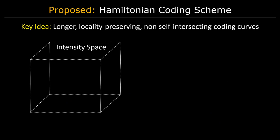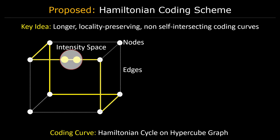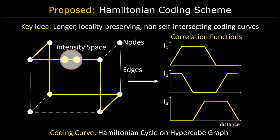We find that the depth resolution of a time-of-flight camera can be increased by using codes with long, locality-preserving, non-self-intersecting coding curves. One family of curves that satisfy all of these properties is Hamiltonian cycles on hypercubes. Due to the length and locality-preserving properties of this curve, adding noise leads to small depth errors. Based on this coding curve, we can generate the correlation functions that parametrize it.